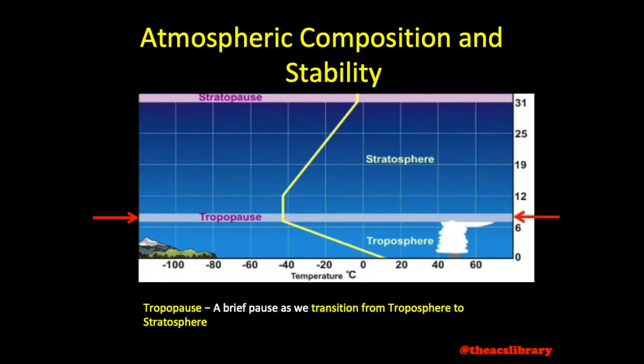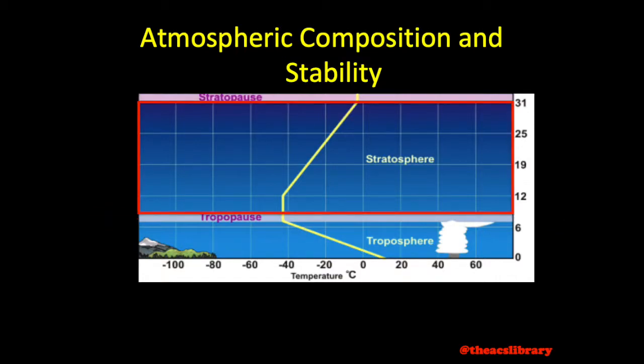The tropopause is a thin layer of atmosphere above the troposphere, and above that lies the stratosphere, which exhibits relatively small increases in temperature with altitude. Commercial aircraft often cruise in the lower stratosphere to avoid turbulence and convection. For the purposes of a private pilot checkride, we will not discuss the layers of the atmosphere beyond the stratosphere in this video.